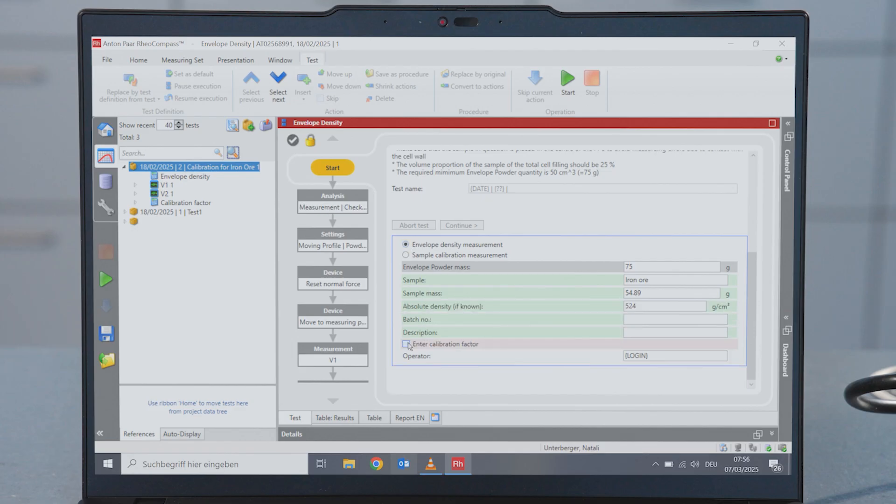Apply the calibration factor to subsequent sample measurements. Averaging the calibration factor results of multiple determinations further improves the final results.